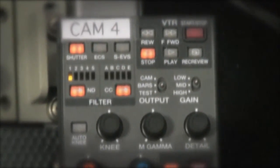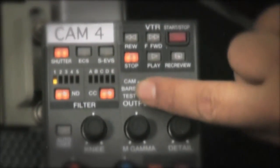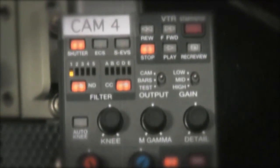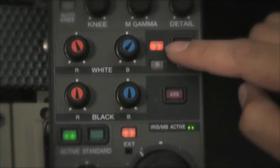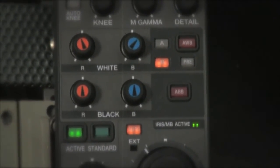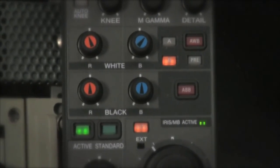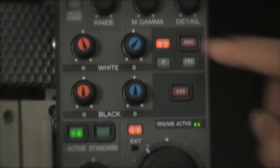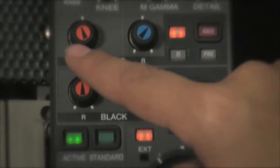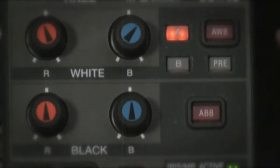First thing you want to do with the Jib CCU is change your output from bars to camera. You can set your white balance for A or for B. This CCU has two memory modes. However, you need to make sure to white balance on A if you want to adjust your red or your blue. In order to white balance, press the AWB button and it will activate.